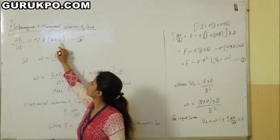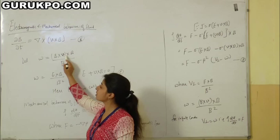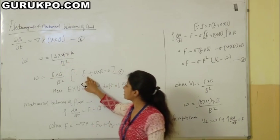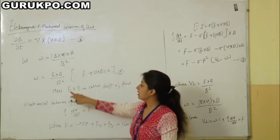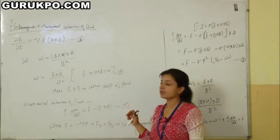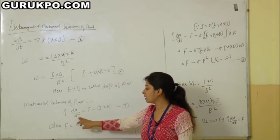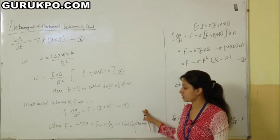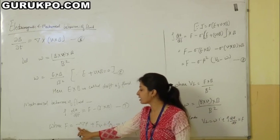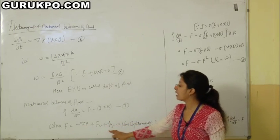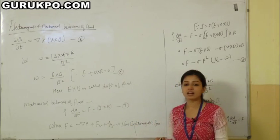For a perfectly conducting fluid, del·B/del·t equals curl(v×B). We define a component w equals (B × curl B) / B², and since E plus v×B equals 0, w equals (E×B) / B², where E×B is the drift of both fluids. The force equation is rho·dB/dt equals F minus j×B, where F is the sum of non-electromagnetic forces: F equals minus gradient p plus f_v plus rho·g, representing pressure gradient, viscous force, and gravitational force respectively.